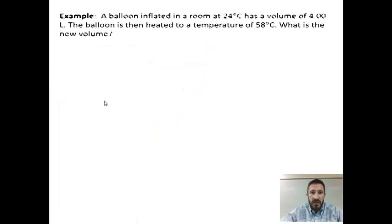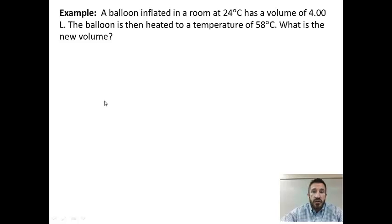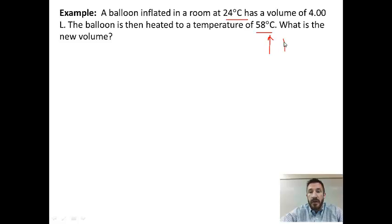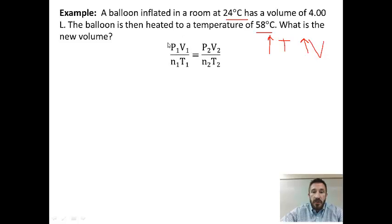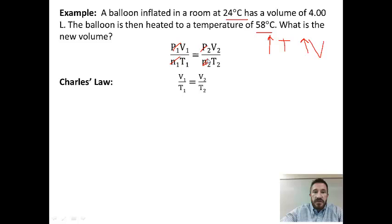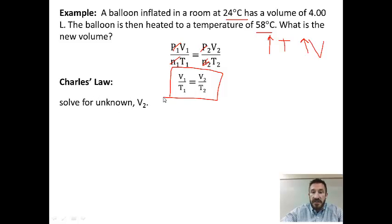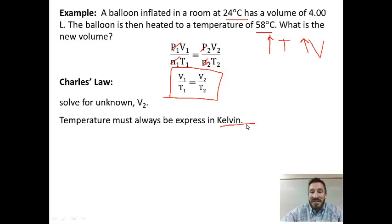Here's a Charles's Law example. A balloon inflated at room temperature — 24 degrees Celsius — has a volume of 4 liters. It's heated to 58 degrees Celsius, so we expect an increase in temperature to lead to an increase in volume. Using Charles's Law — V1/T1 = V2/T2 — we rearrange to solve for V2. Remember, temperature must always be expressed in Kelvin by adding 273 to the Celsius value.